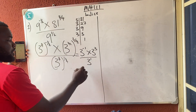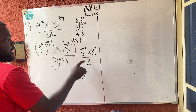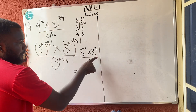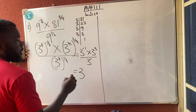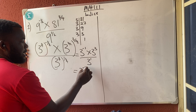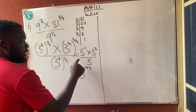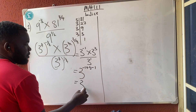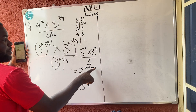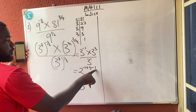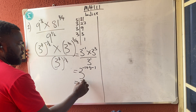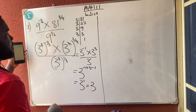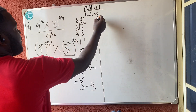Remember the law of indices: if the bases are the same, I can take one 3. If I have multiplication, I add; if I have division, I subtract. So I have minus one plus three, then minus one because of the division. My final answer becomes 3 raised to power: minus one plus three minus one equals one. And 3 raised to power one is 3. As simple as that.